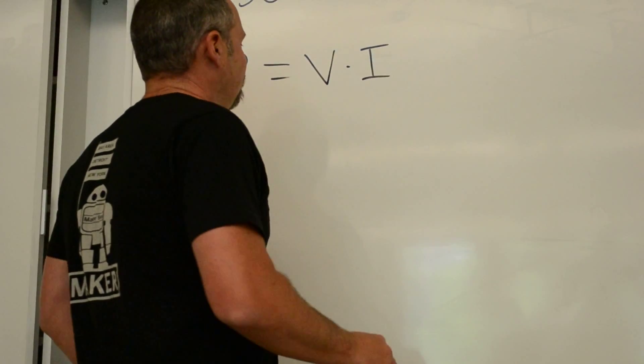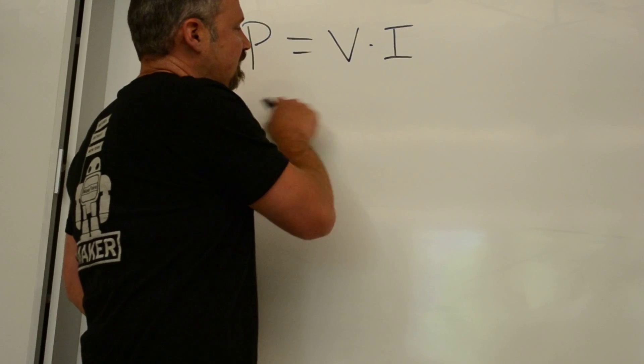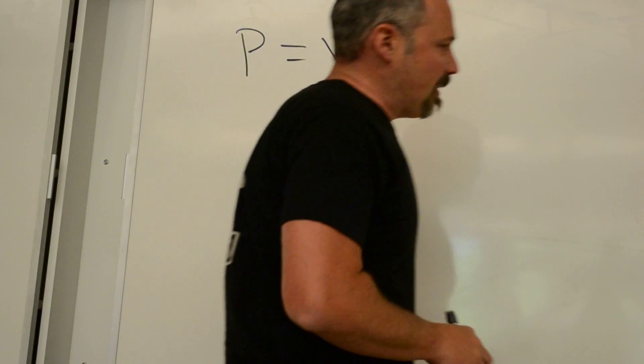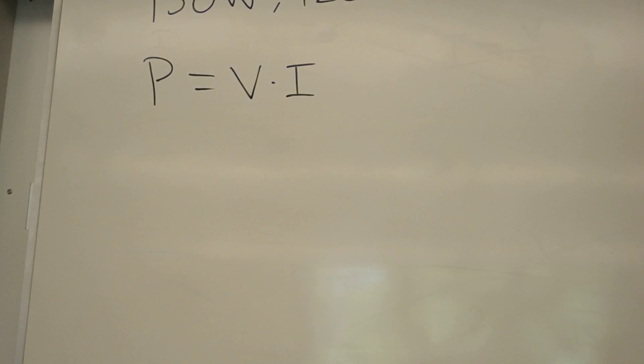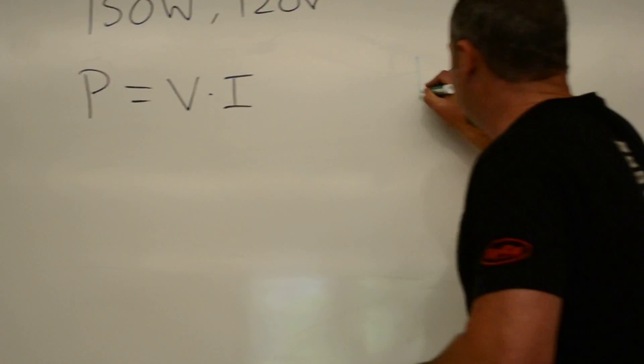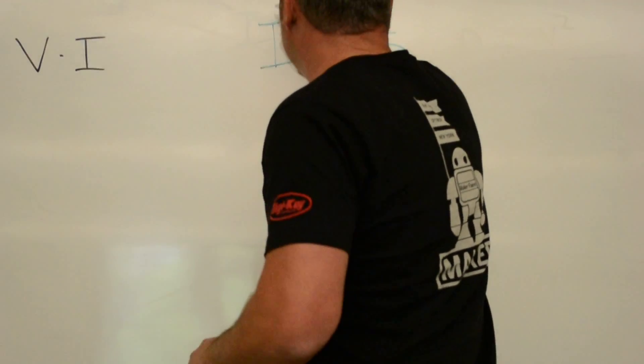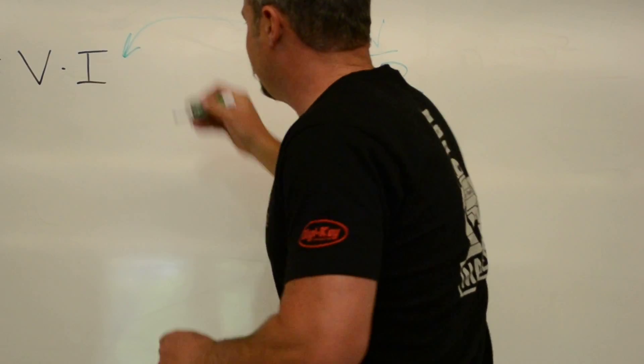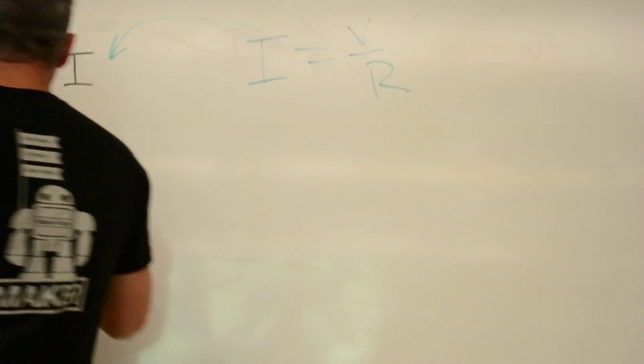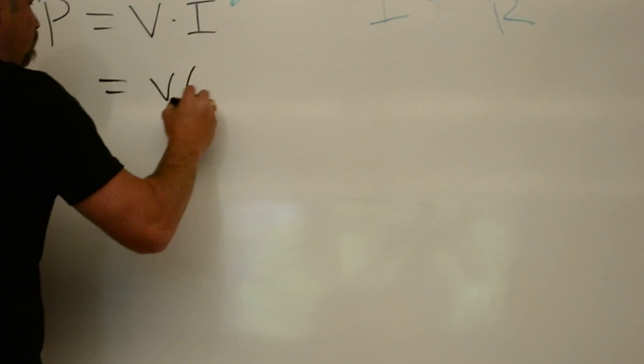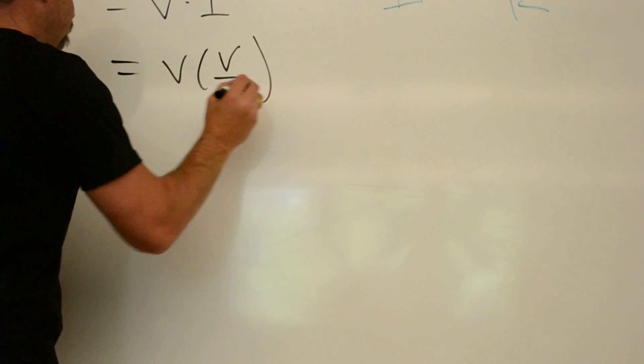Okay, that aside, let's calculate its resistance. This is the power equation, but we also know Ohm's law, which tells us that current equals voltage divided by resistance. We can plug in here for current, and then we get power equals voltage times voltage over resistance.